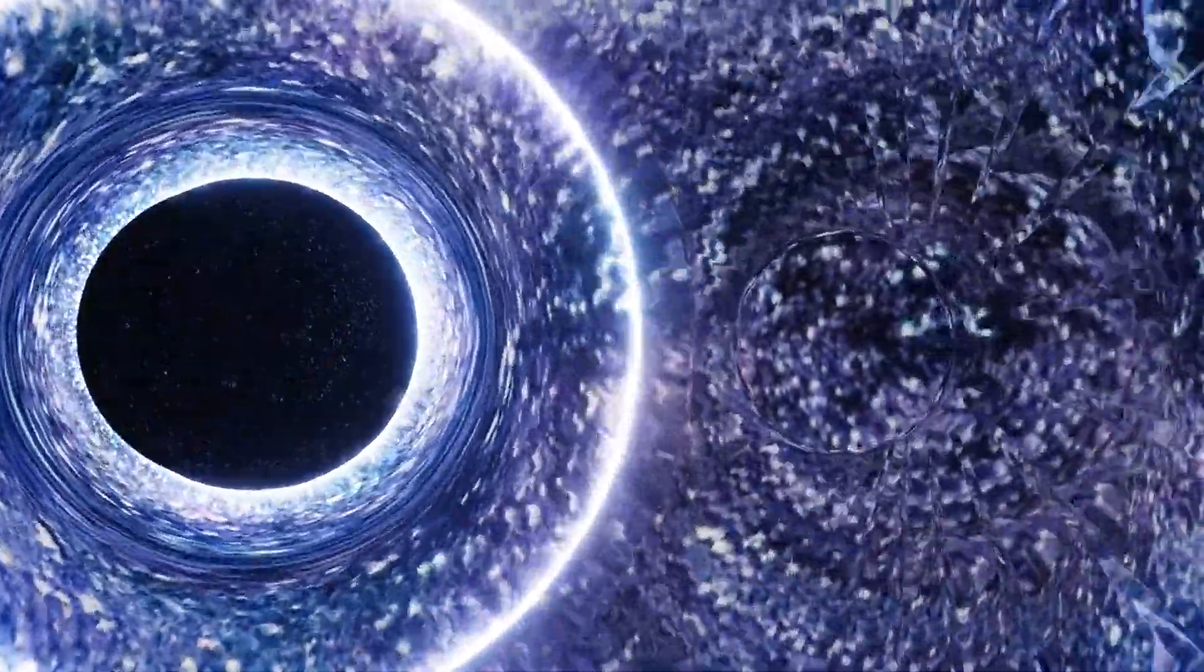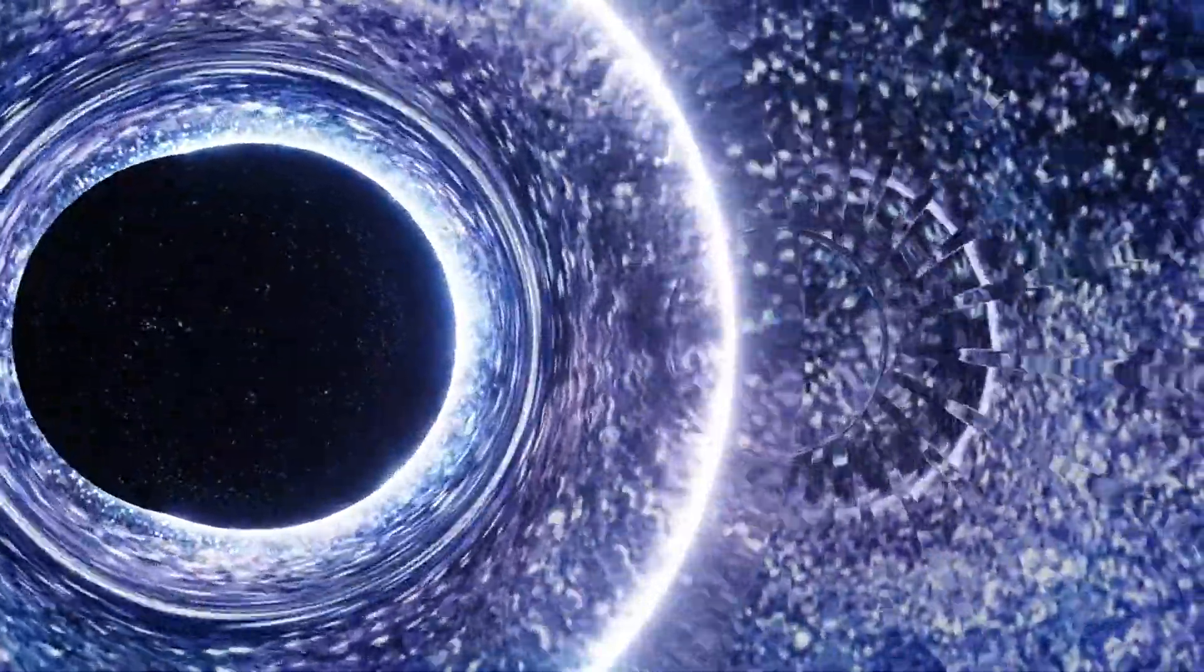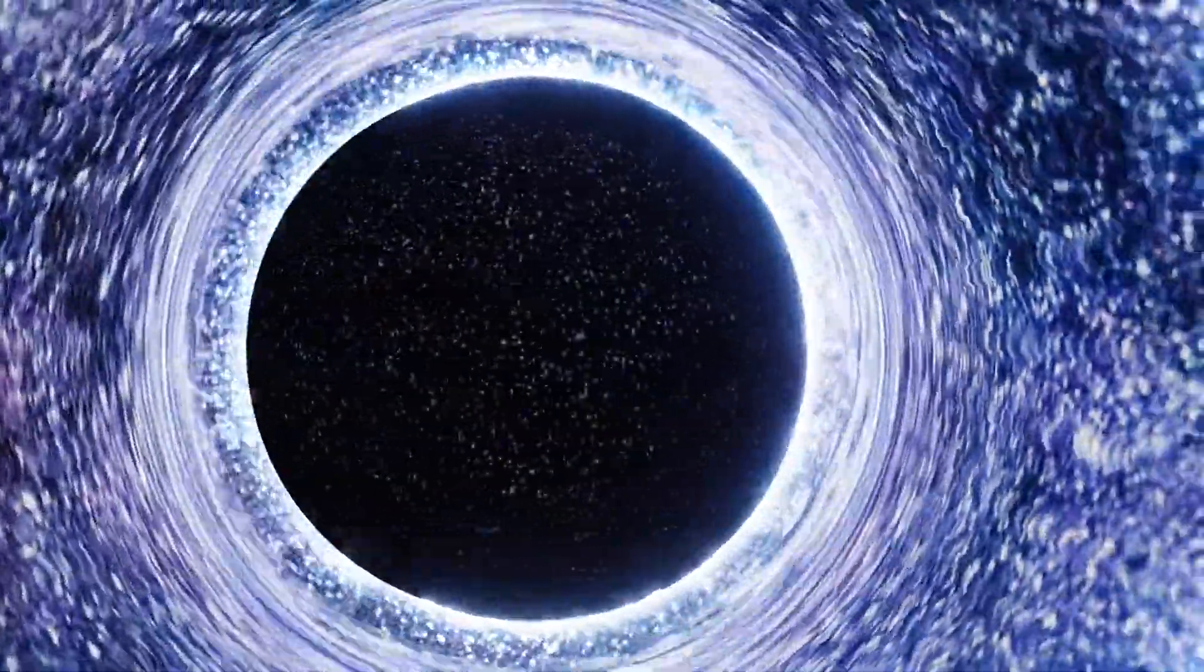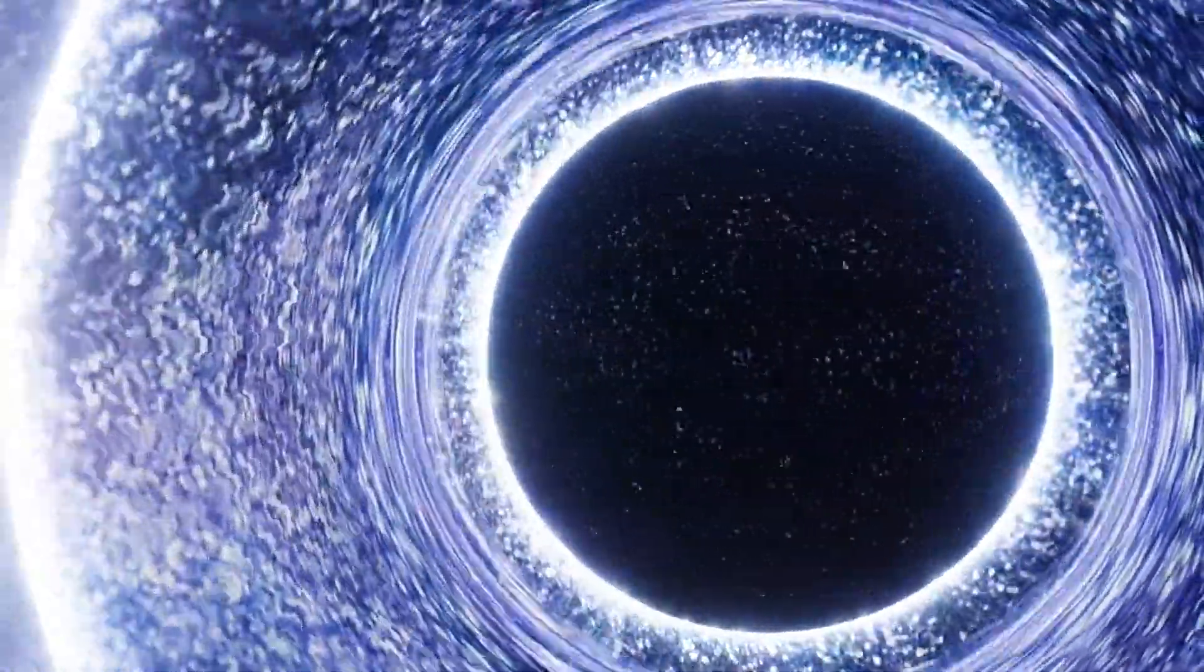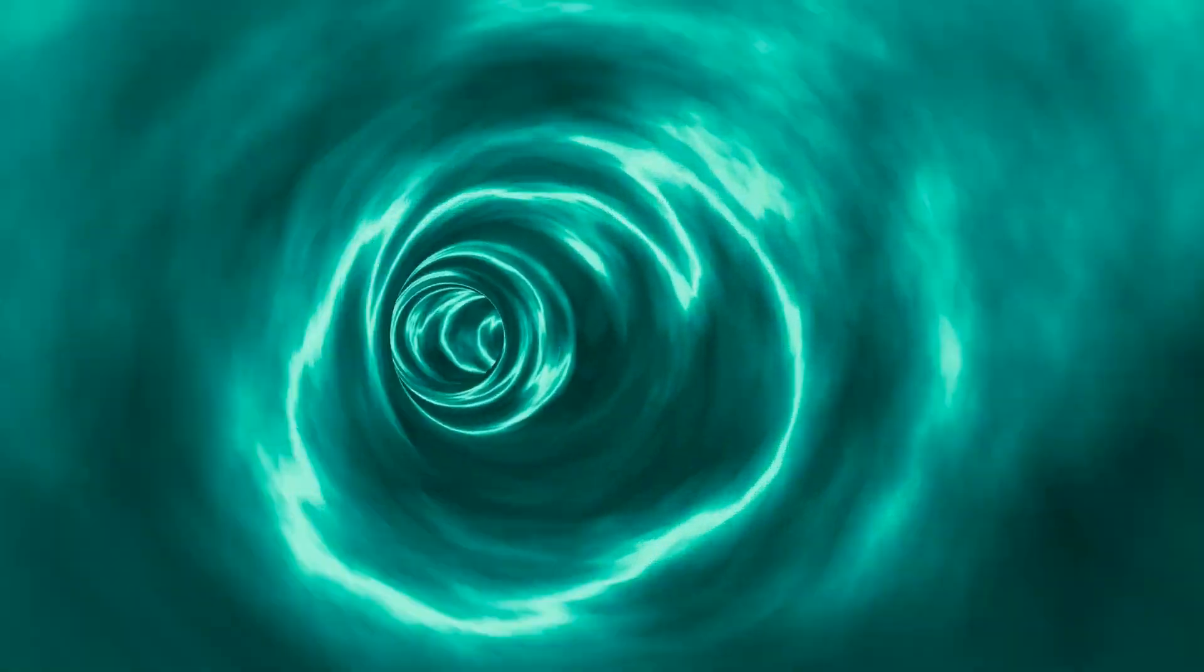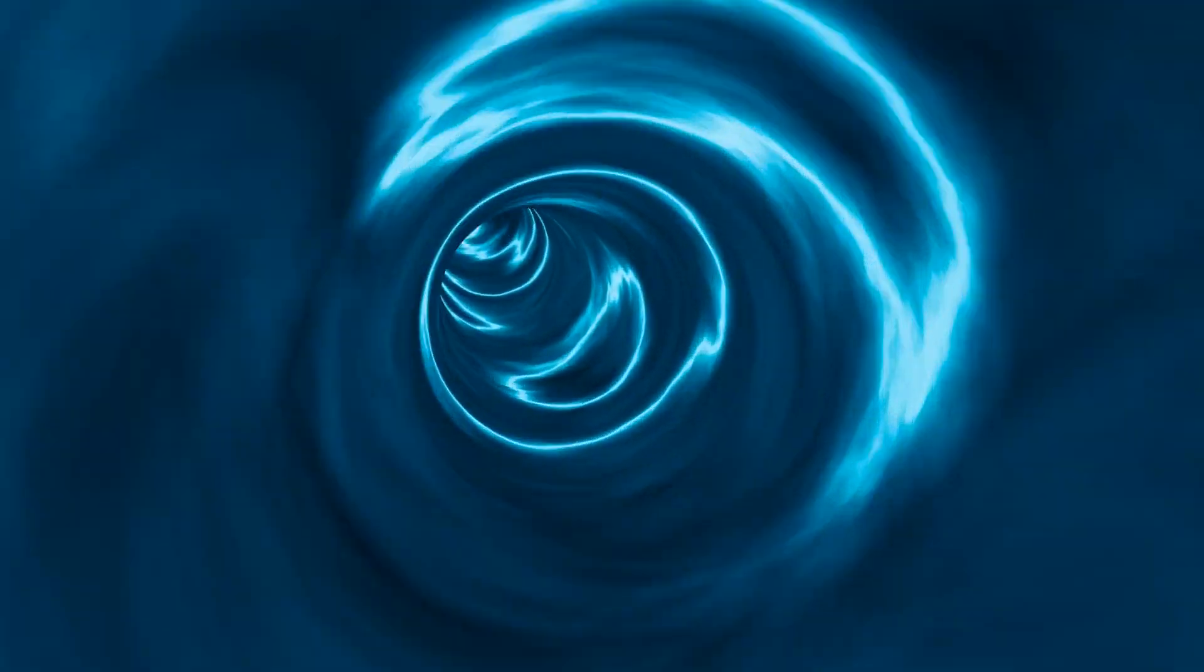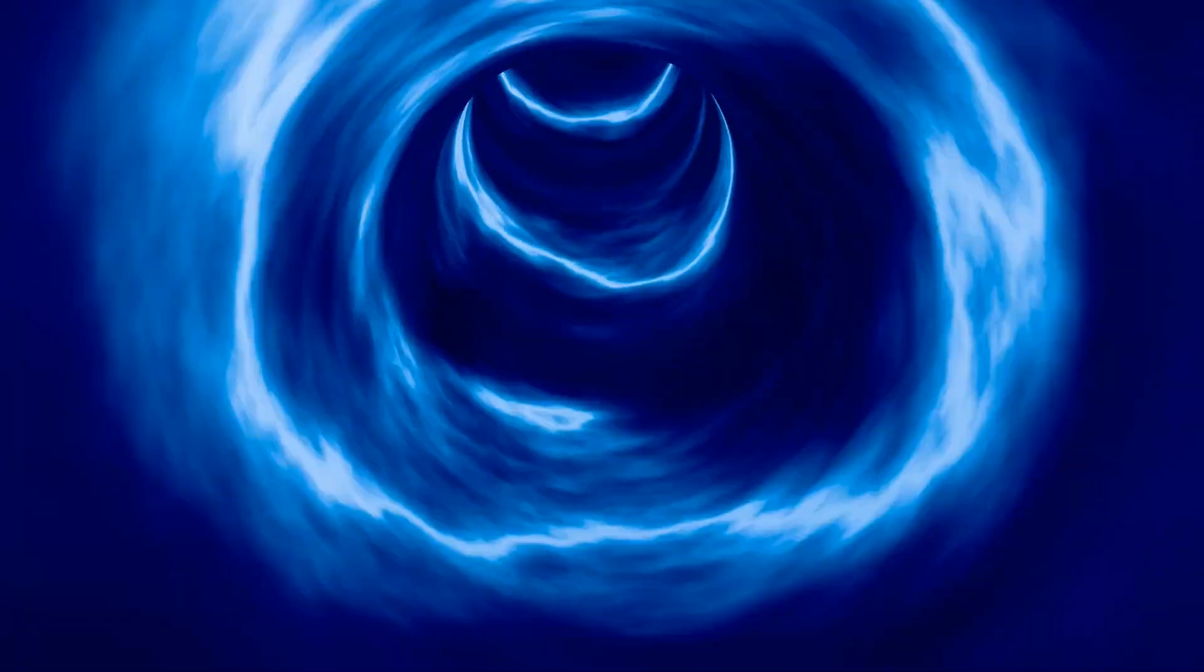But how does this explain galaxies moving apart? Well, consider the matter being pushed out by the white holes. This matter, full of energy and momentum, doesn't just stop. It continues to move outward, away from the white hole. And as it does so, it carries galaxies along with it, creating the illusion that they're moving apart.